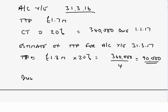When will our first quarterly instalment payment fall due? Our first quarterly instalment payment is due on the 14th day of the seventh month from the start of the accounting period. The start of this accounting period ended 31st March 2017 was the 1st of April 2016. Therefore it will be due on the 14th of the seventh month from that start — counting through, that will be the 14th of October 2016 — and £90,000 would then be due.